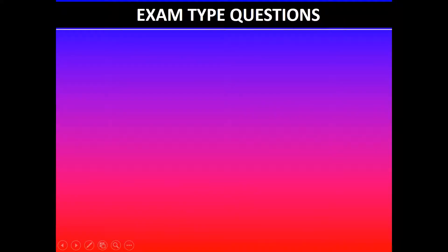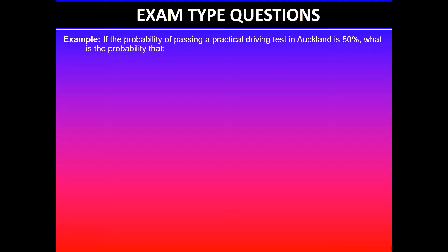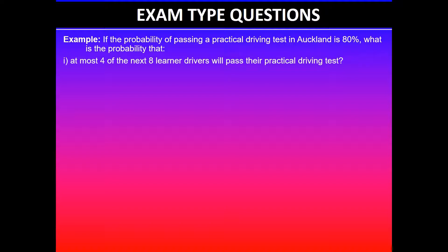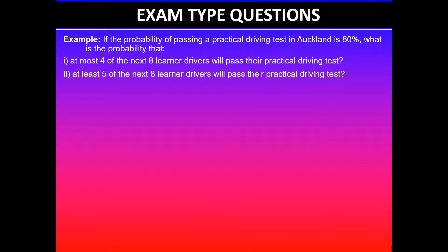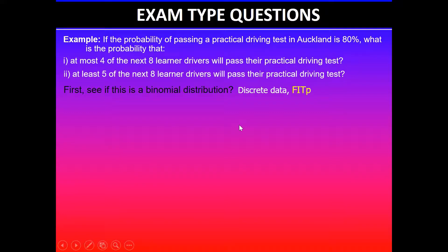Moving on, we'll look at the exam type questions. In this example, it says: if the probability of passing a practical driving test in Auckland is 80%, what is the probability that at most four of the next eight learner drivers will pass their driving test? The second part says: what is the probability that at least five of the next eight learner drivers will pass their driving test? First, we need to see if this is a binomial distribution, since there are five different types of distributions to be familiar with. The data is discrete because we're looking at learner drivers — we can count drivers — so it can take only whole number values.